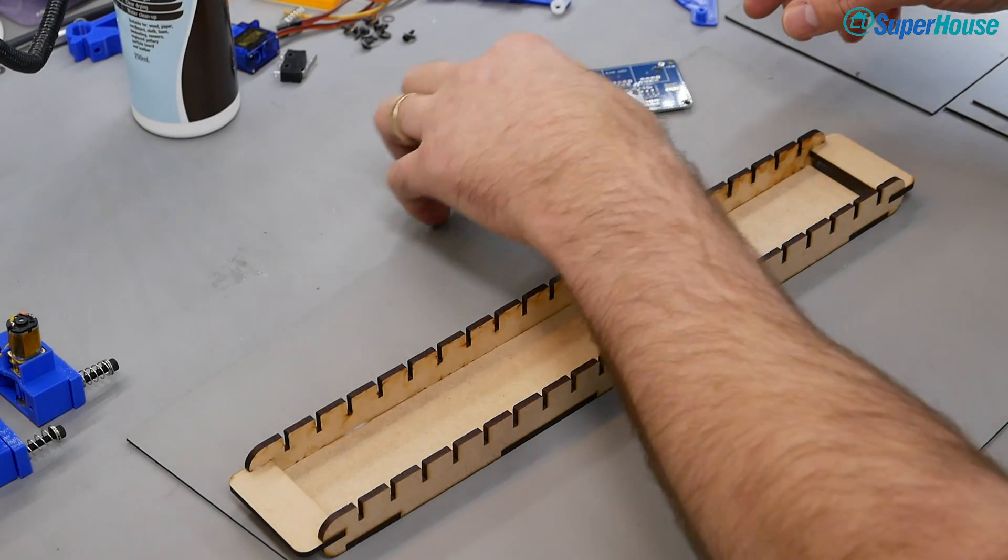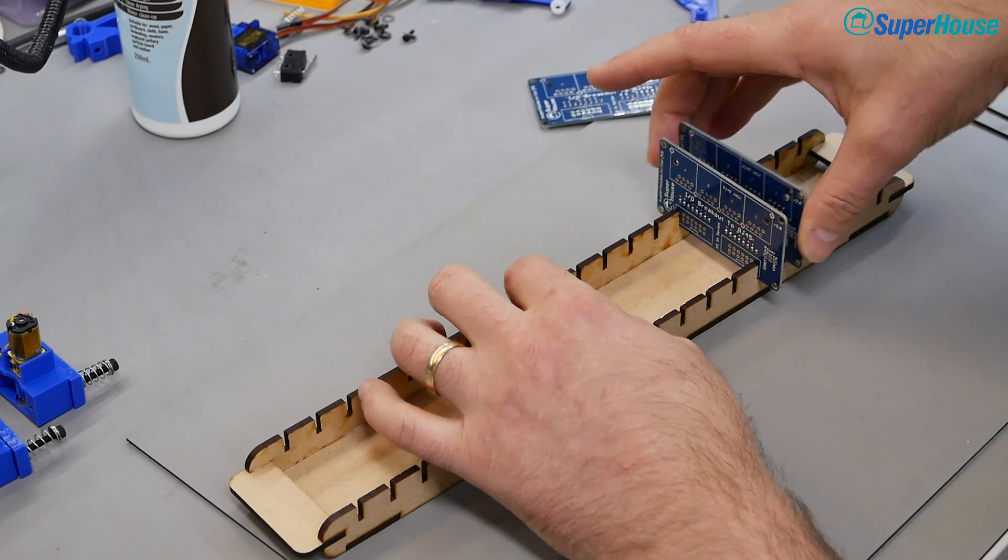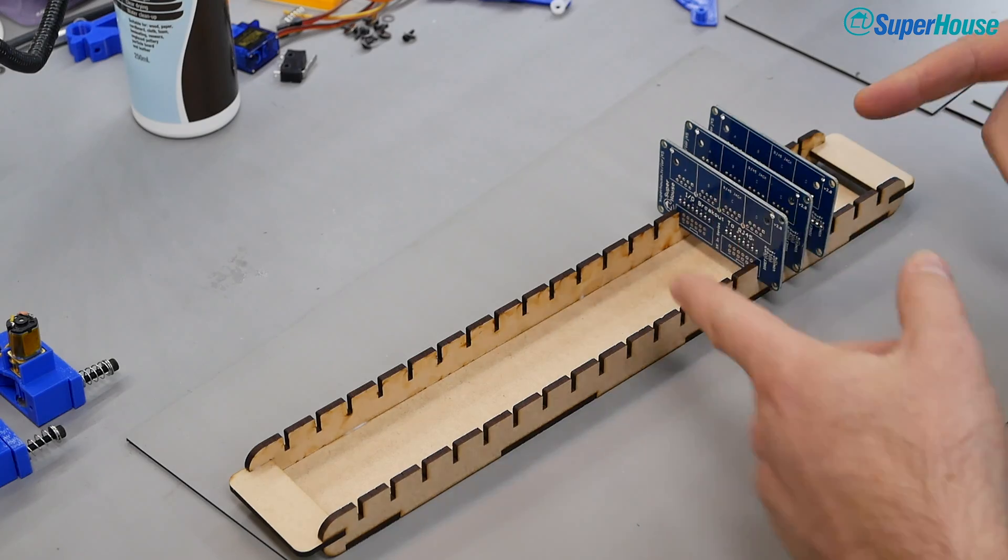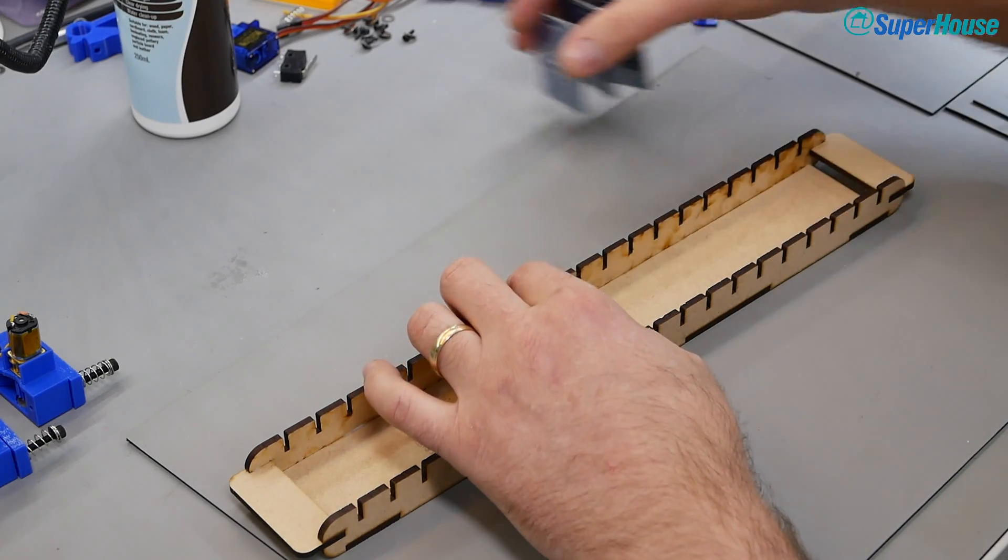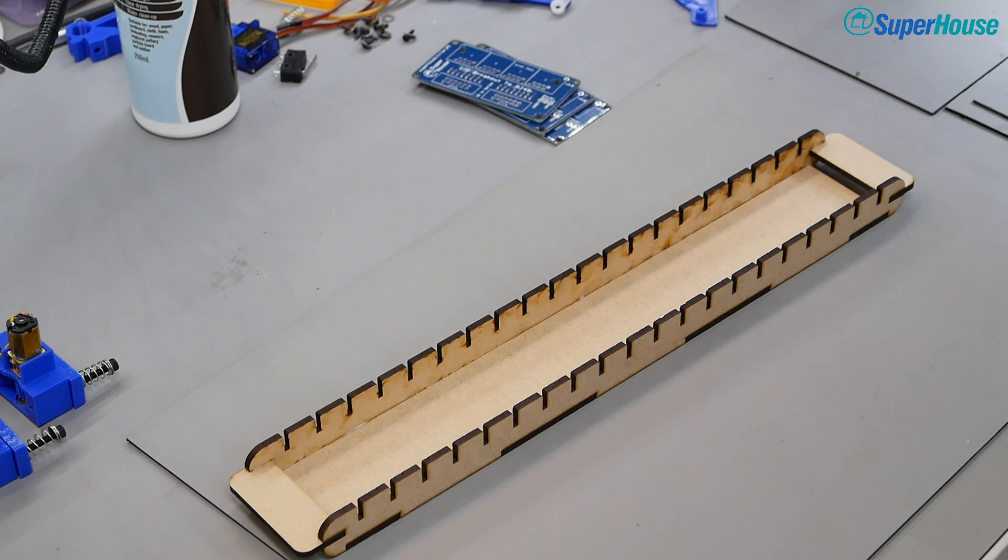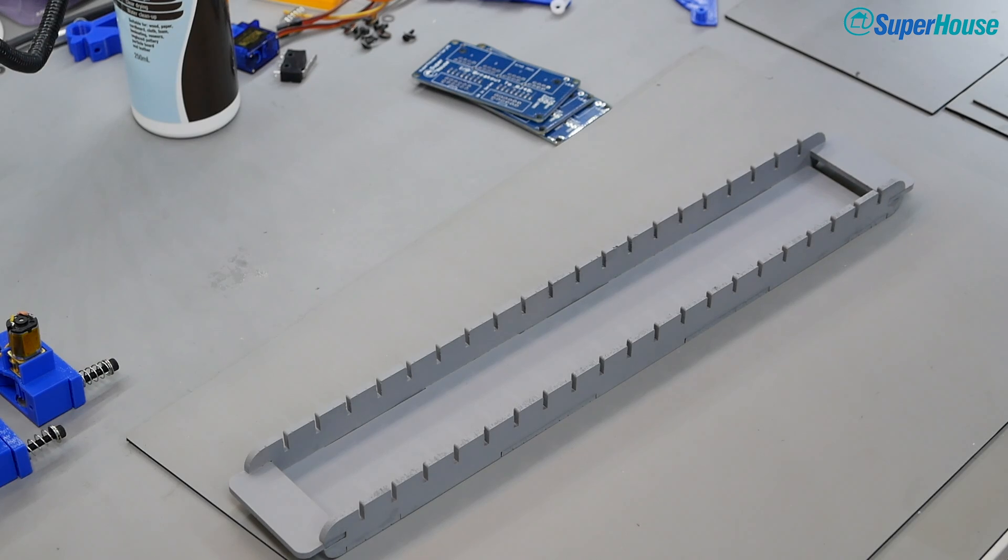Well the glue is now dry on this tray so we can chuck a couple of PCBs in here and it works exactly as intended. Now I need to put some undercoat on it and then I'm just going to paint this gloss white. I'm not going to make you watch me do that so let's go for undercoat and then we'll go for gloss white.